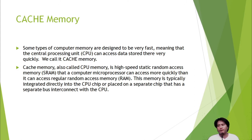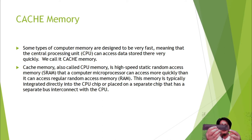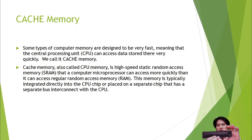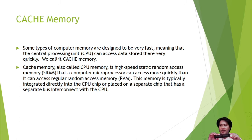Cache memory may be integrated directly into the CPU chip, or placed on a separate chip with a separate bus interconnect with the CPU. So if this is the physical CPU, there might be a small space inside it for cache memory. Alternatively, cache memory could be a separate chip connected to the CPU via a separate bus — like another box connected to the central processing unit.